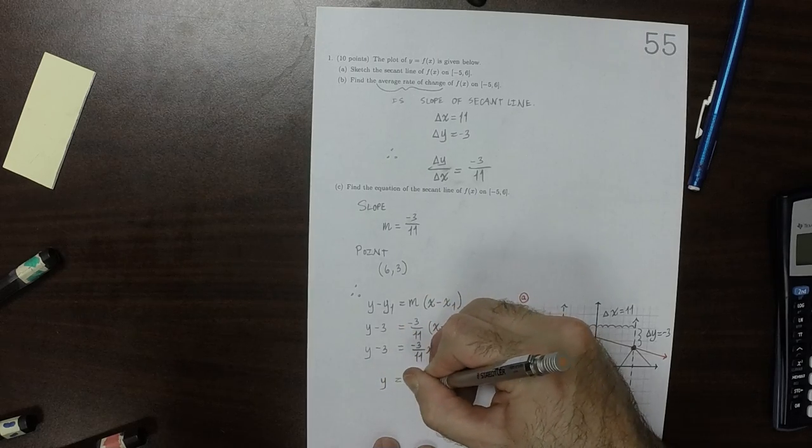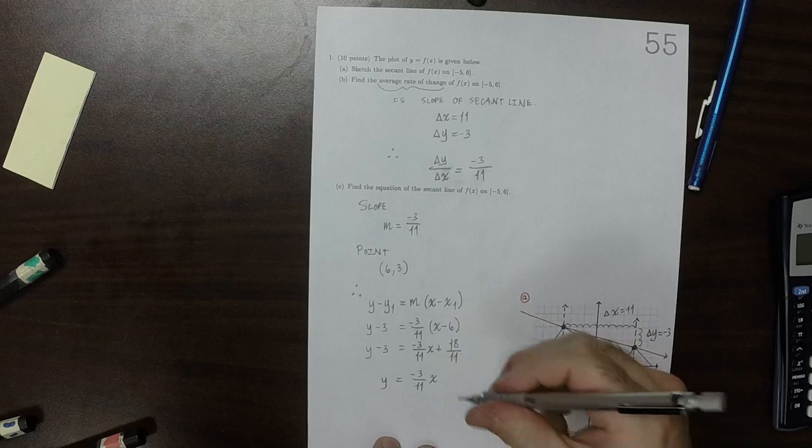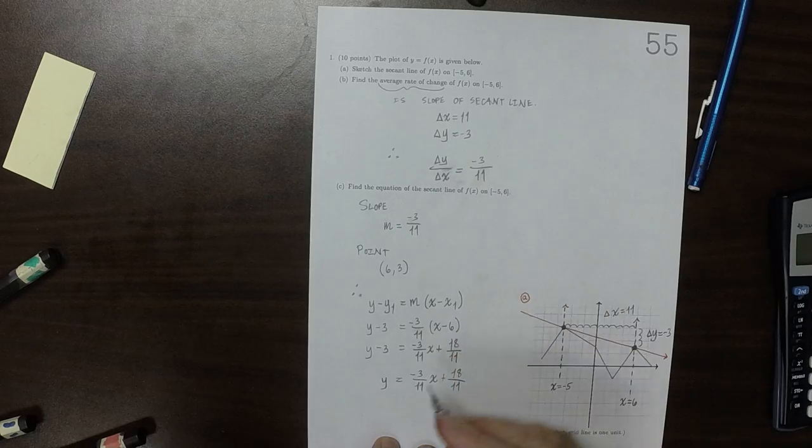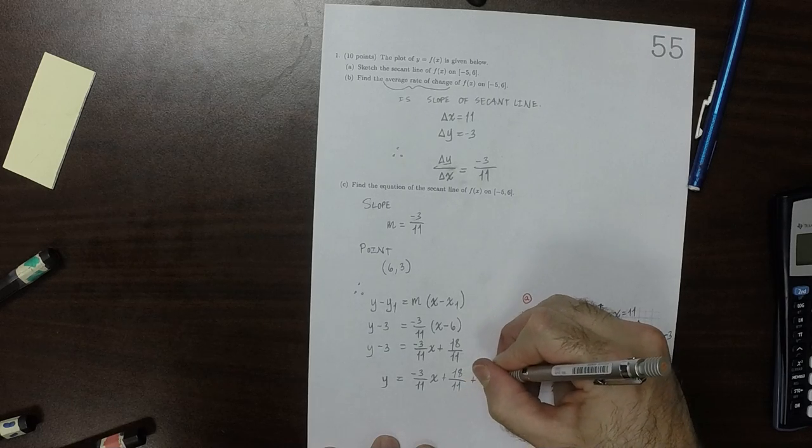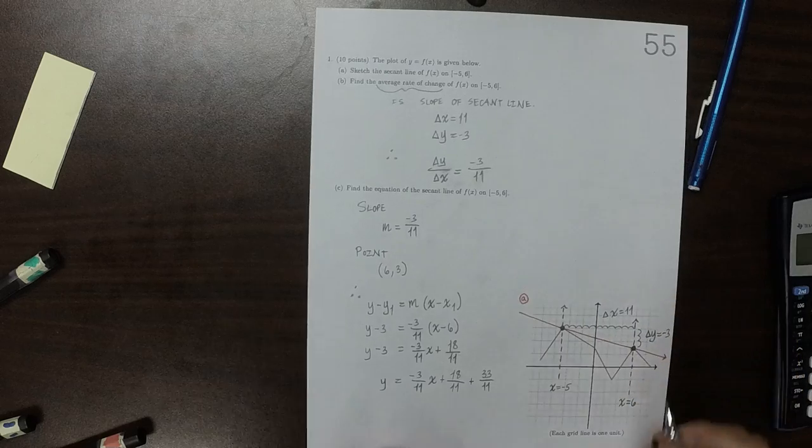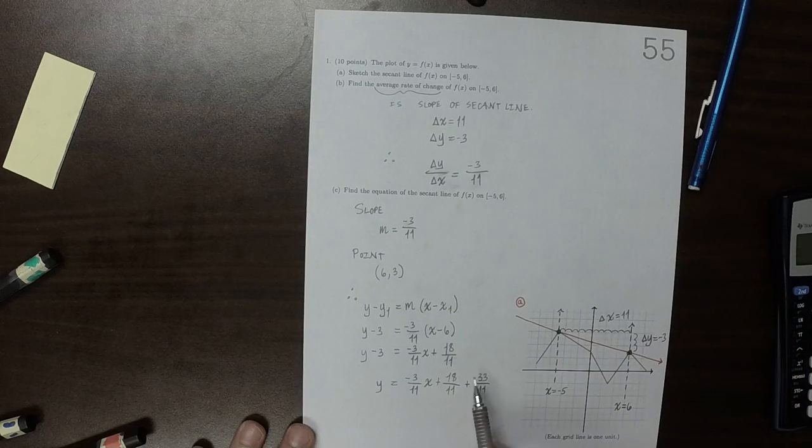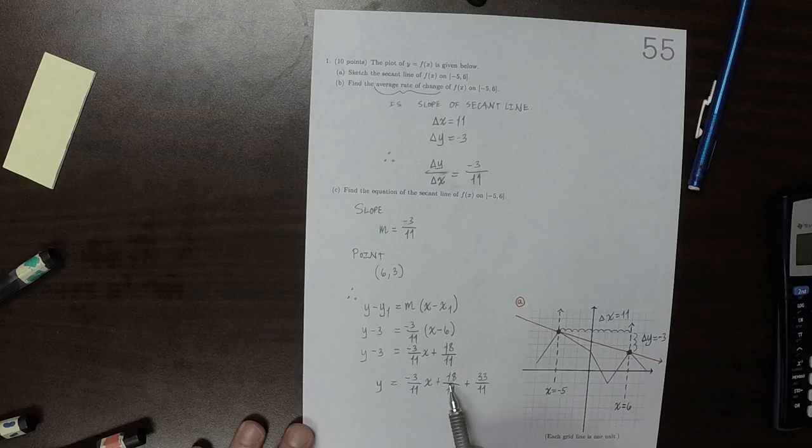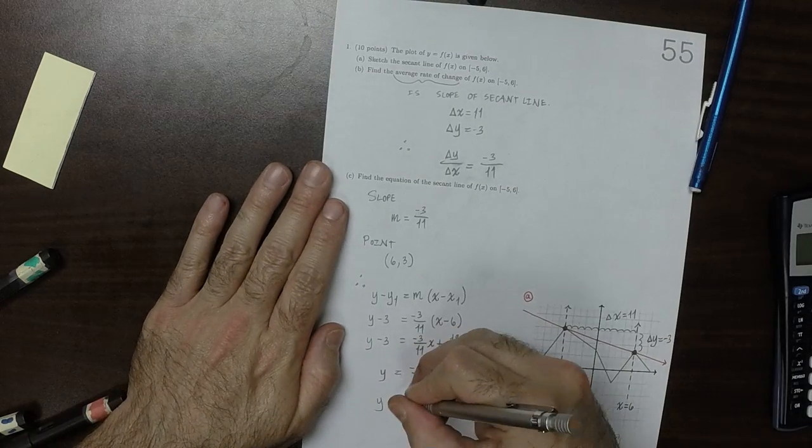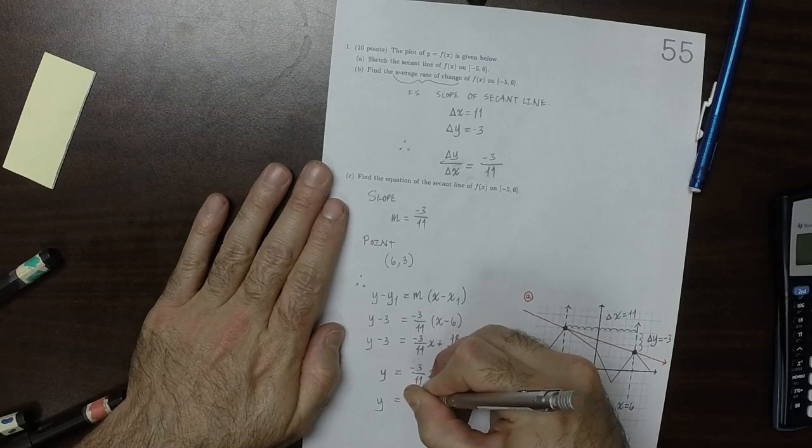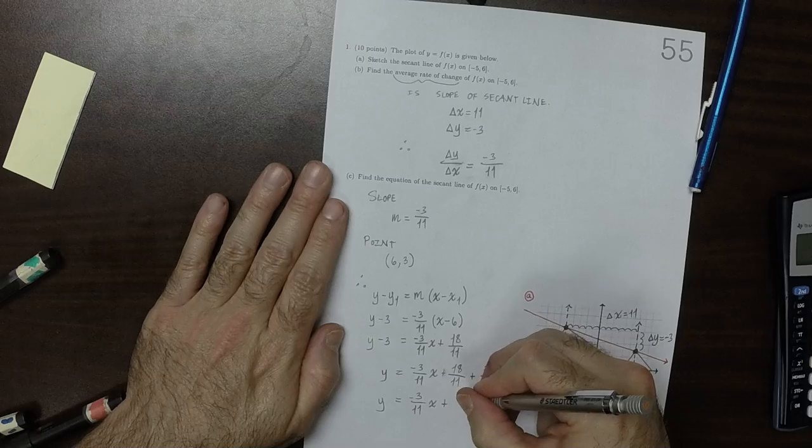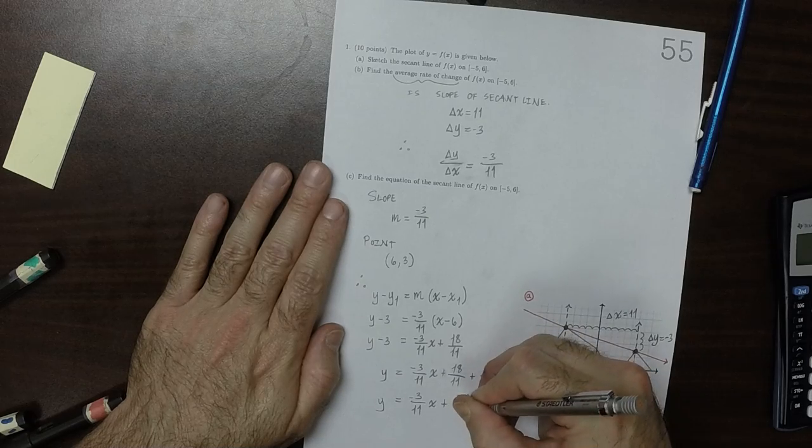Y is negative 3 over 11, X plus 18 over 11. And then plus 3, but 3 is 33 over 11. So that would be 51 over 11. So negative 3 over 11, X plus 51 over 11.